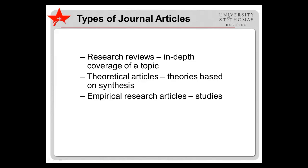There are several types of journal articles. Some articles are research reviews, in which the authors summarize the empirical research on a topic to date and offer suggestions for further research. Although most journal articles include a literature review of relevant research, research reviews are more in-depth and typically cover more ground.